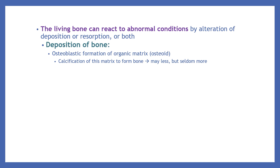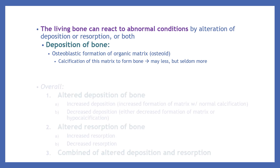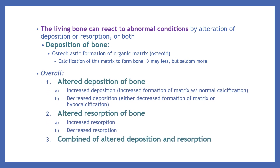The deposition of bone is called osteoblastic formation of organic matrix or osteoid. The calcification of this matrix to form bone may be less, but seldom more. The altered deposition of bone is divided into increased deposition, which is increased formation of matrix with normal calcification, or decreased deposition, which is either decreased formation of matrix or hypocalcification. The second type is altered resorption of bone, further divided into increased or decreased resorption, and the last is a combination of altered deposition and resorption.